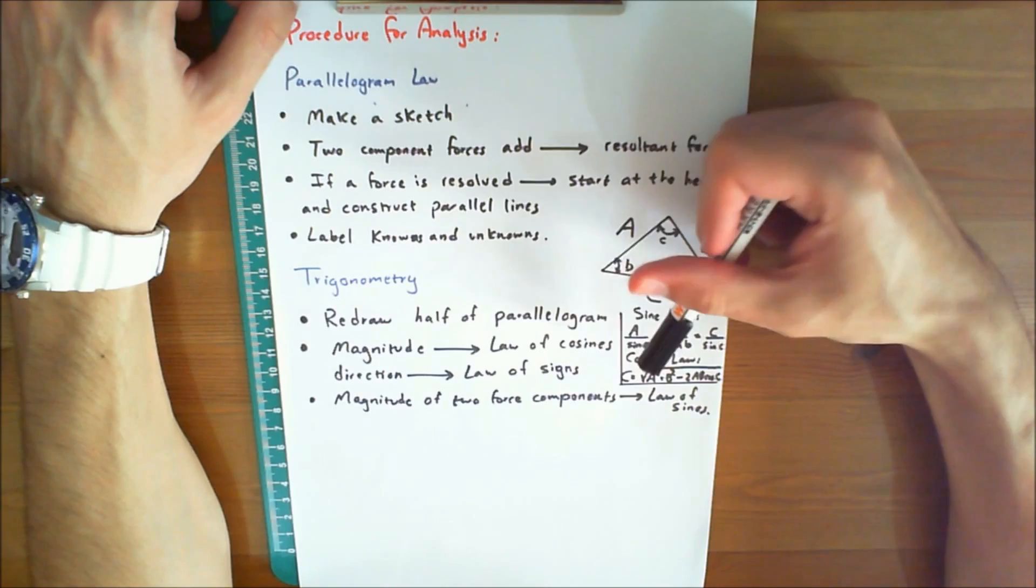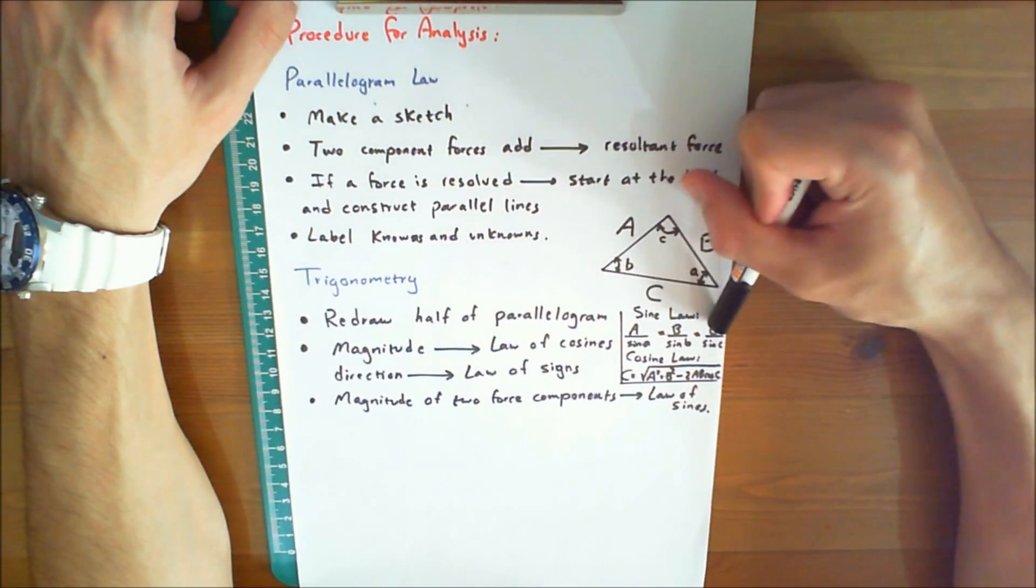So sine law states that A over sine A is equal to B over sine B, which is equal to C over sine C.